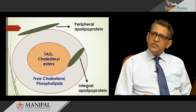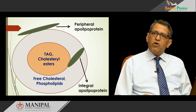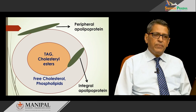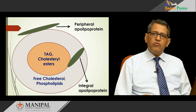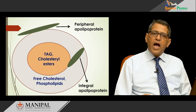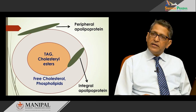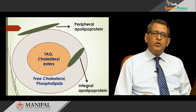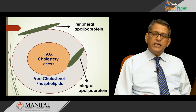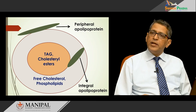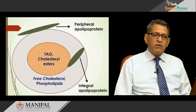The central lipid core, which is neutral, is made up of triacylglycerol and cholesterol esters. The outer shell consists of a monolayer of free cholesterol and phospholipids. The arrangement is such that their polar groups are oriented on the outer surface and non-polar groups are towards the central neutral lipid core.